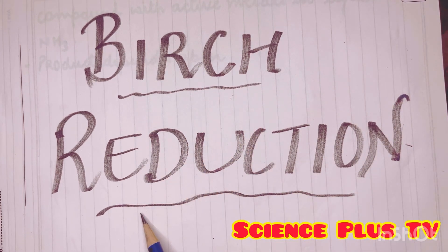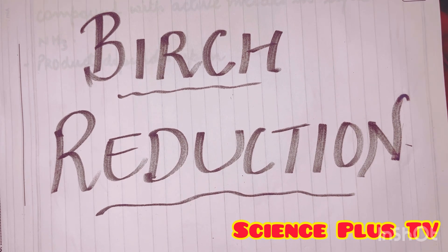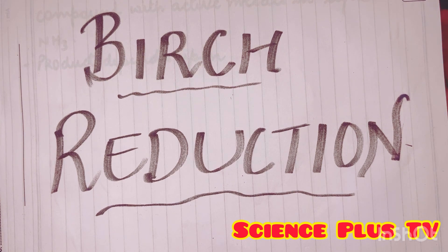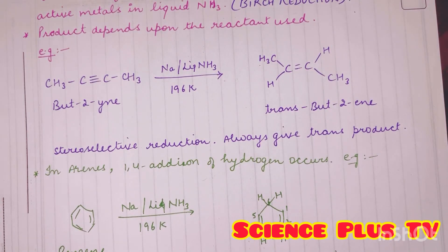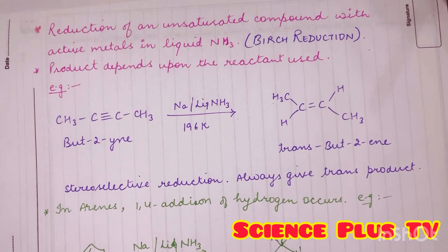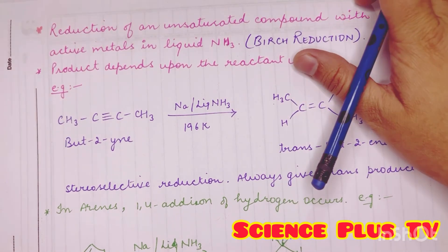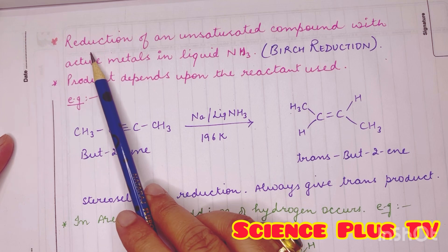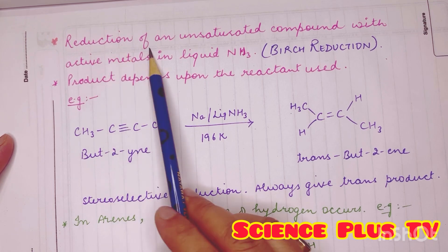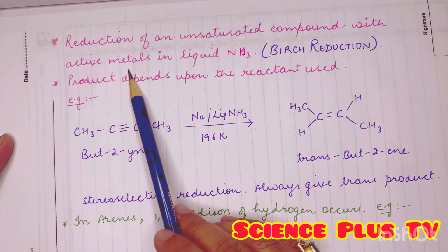This name reaction is very important. First of all, just look at the word 'reduction.' Reduction means moving from an unsaturated to a saturated system — addition of hydrogen atoms to convert any unsaturation into saturation. So now let us discuss this special reaction, which is called Birch reduction. It is basically a reduction of an unsaturated compound with active metals.